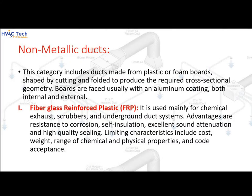Non-metallic ducts include ducts made from plastic or foam boards shaped by cutting and folding to produce the required cross-sectional geometry. Boards are usually faced with an aluminum coating on both internal and external surfaces. Fiberglass reinforced plastic (FRP) is used mainly for chemical exhaust, scrubbers, and underground duct systems. Advantages include resistance to corrosion, self-insulation, excellent sound attenuation, and high-quality sealing. Limiting characteristics include cost, weight, range of chemical and physical properties, and code acceptance.